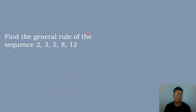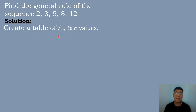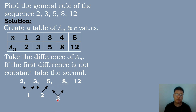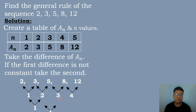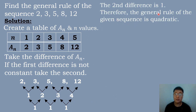Let's now have our next example. Find the general rule of the sequence 2, 3, 5, 8, and 12. Let's create a table of a sub n and n values. After that, we'll take the difference of a sub n: 3 minus 2 is 1, 5 minus 3 is 2, 8 minus 5 is 3, and 12 minus 8 is 4. If the first difference is not constant, we will take the second difference: 2 minus 1 is 1, 3 minus 2 is 1, 4 minus 3 is 1. The second difference is 1. Therefore, the general rule of the given sequence is quadratic.